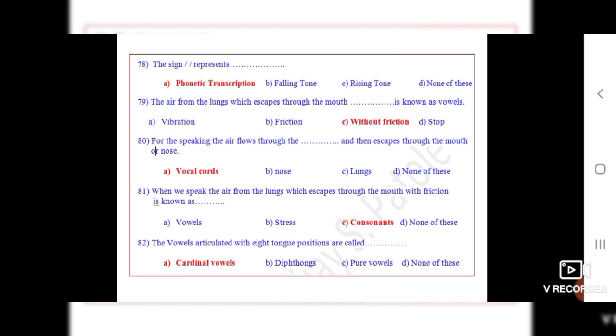Question 82: The vowels articulated with eight to ten positions are called dot dot dot. The correct option is cardinal vowels.